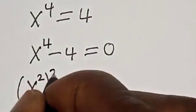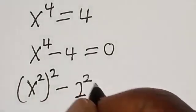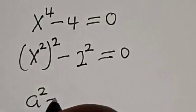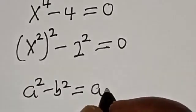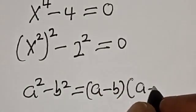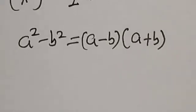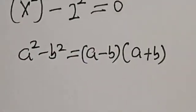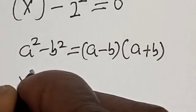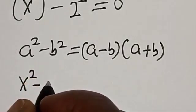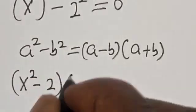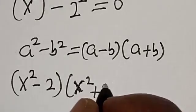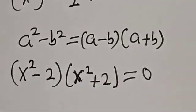x squared squared minus 2 squared is equal to 0. This is a difference of two squares. That is, a squared minus b squared is equal to a minus b multiplied by a plus b. Our a, in this case, is x squared and b is 2. Let's substitute: x squared minus 2, multiplied by x squared plus 2, is equal to 0. So there are two cases here.